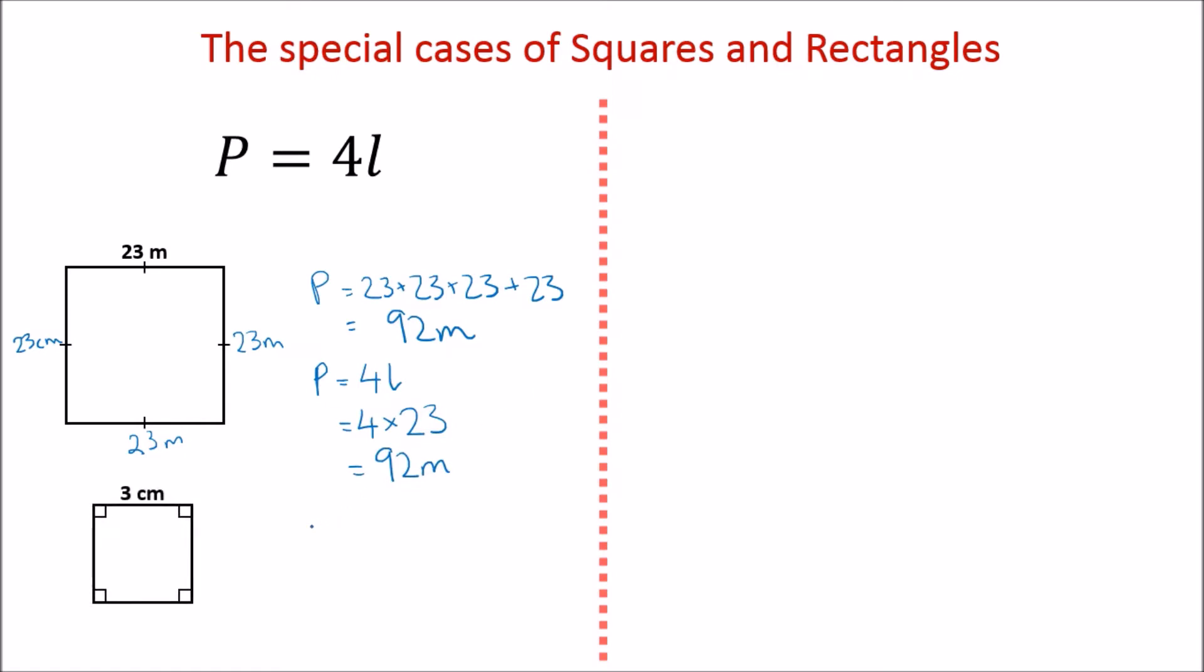This square here, we would again do perimeter equals four times the length, so that is four times three, giving us 12 centimeters.